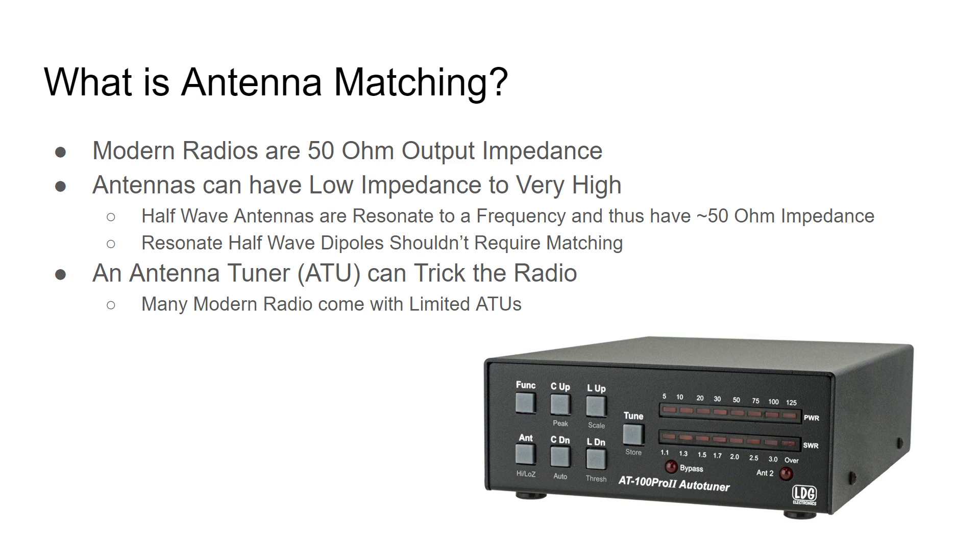Now, what an antenna tuner does, is it does not tune your antenna. It tricks the radio by either adding or removing inductive or capacitive reactance to your antenna system. They also introduce line loss. So, your antenna is not going to perform any better. It's just that your radio will not have problems because of reflected power coming back into the radio that could cause problems with your finals or your radio in general. Many modern radios do come with limited ATUs that handle SWRs up to 3 to 1. But, in many cases, you'll see much, much higher SWR ratios depending upon the type of antenna and how you have it mounted.